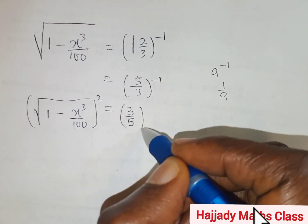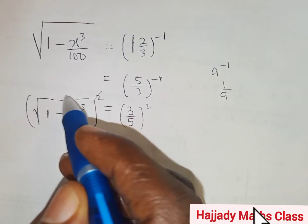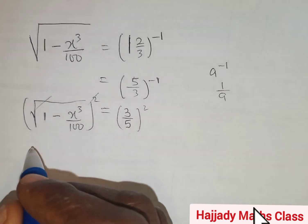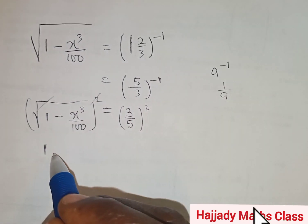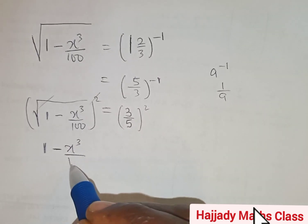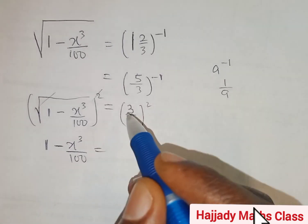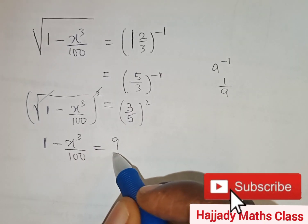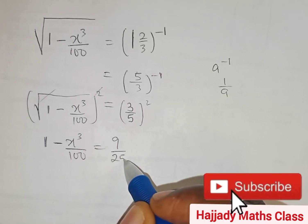So squaring both sides, the square cancels out the square root. So at the left hand side, we have 1 minus x raised to the power 3 over 100 equal to 3 squared gives 9, 5 squared gives 25.